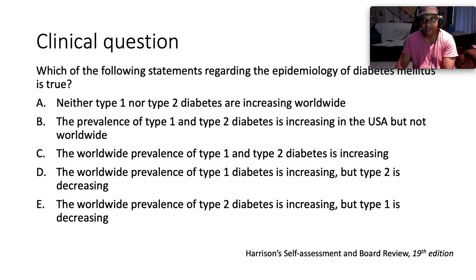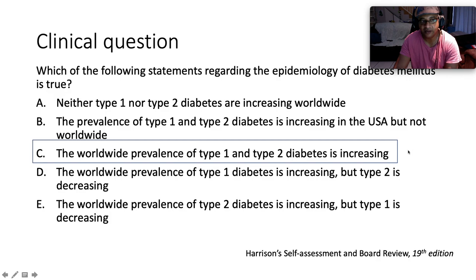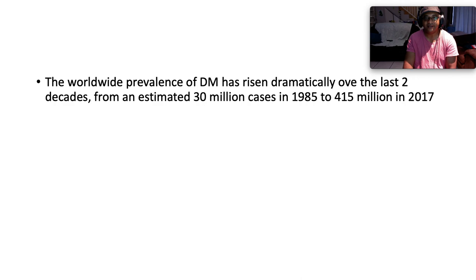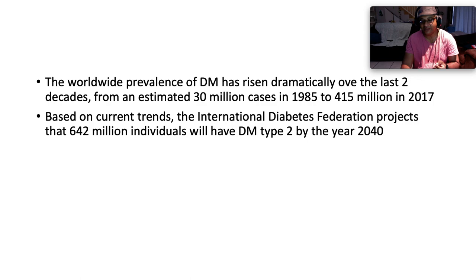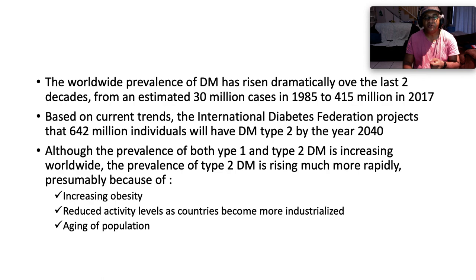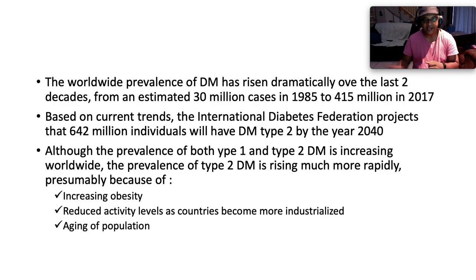Coming back to our clinical question: the correct answer is C — the worldwide prevalence of type 1 and type 2 diabetes is increasing. The worldwide prevalence of diabetes has risen dramatically over the last two decades, from an estimated 30 million cases in 1985 to 415 million in 2017. The International Diabetes Federation projects that approximately 642 million individuals will have type 2 diabetes by 2040. Although both types are increasing, type 2 is rising much more rapidly, presumably due to increasing obesity, reduced activity levels as countries industrialize, and aging of the population.